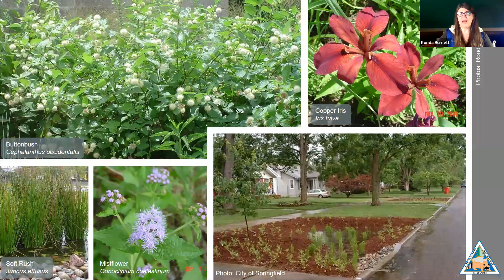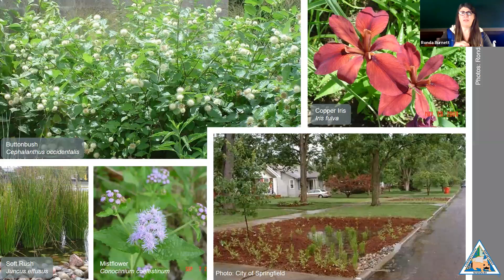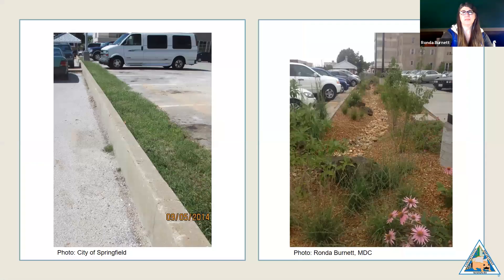One of the infrastructure projects I work on most frequently involves rainwater management. Some of my favorite native plants for these practices include buttonbush, copper iris, soft rush, and mist flower. The photo on the lower right shows a rain garden constructed in a residential neighborhood in Springfield, Missouri. It's one of a series installed to divert water off the street after rain, to alleviate flooding happening at the intersection down the block where water was pooling.